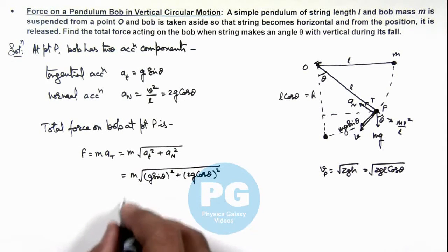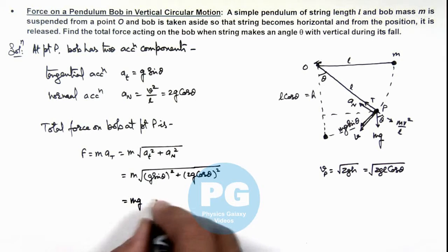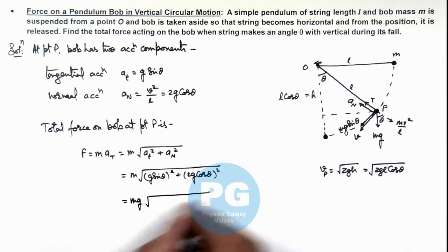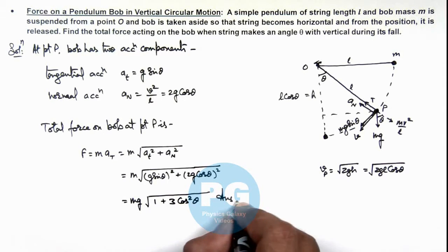And on simplifying, we are getting it as mg root of 1 plus 3 cos² theta. And that'll be the final result of this problem.